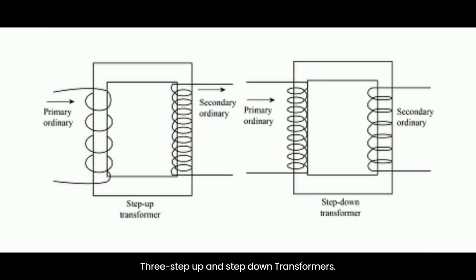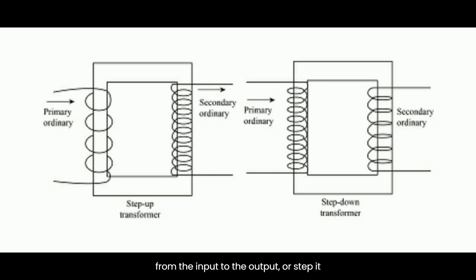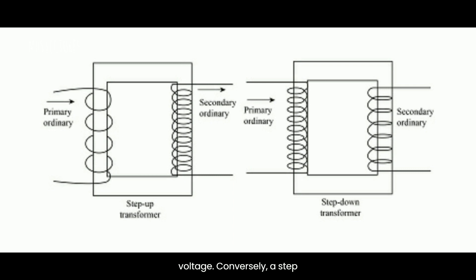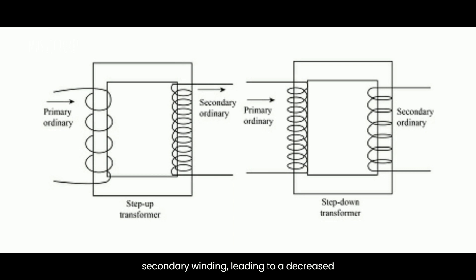Step-up and step-down transformers: Transformers can either step up the voltage, increasing the voltage level from the input to the output, or step it down, decreasing the voltage level. A step-up transformer has more turns in the secondary winding than in the primary winding, resulting in an increased output voltage. Conversely, a step-down transformer has fewer turns in the secondary winding, leading to a decreased output voltage.